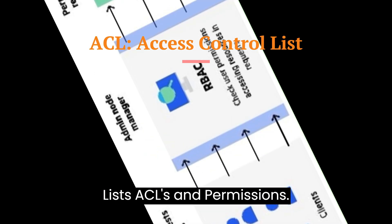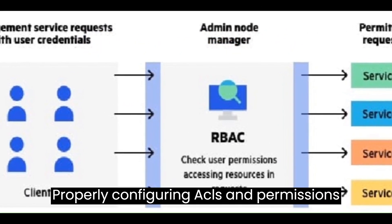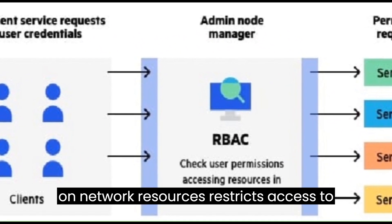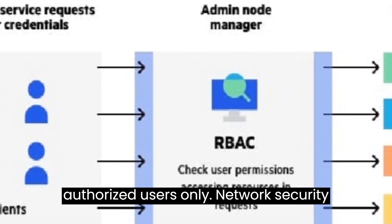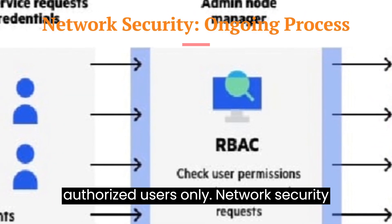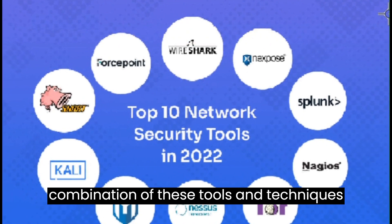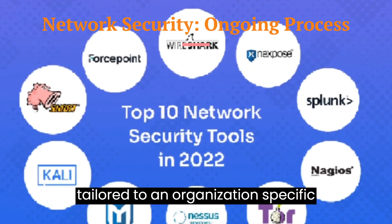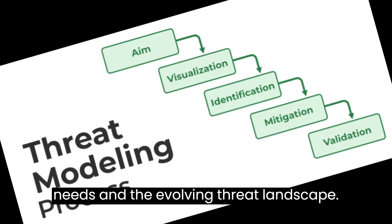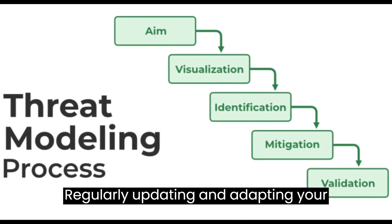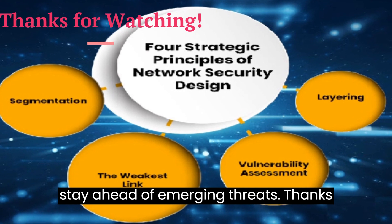20. Access Control Lists, ACLs, and permissions. Properly configuring ACLs and permissions on network resources restricts access to authorized users only. Network security is an ongoing process that requires a combination of these tools and techniques, tailored to an organization's specific needs and the evolving threat landscape. Regularly updating and adapting your network security strategy is essential to stay ahead of emerging threats.